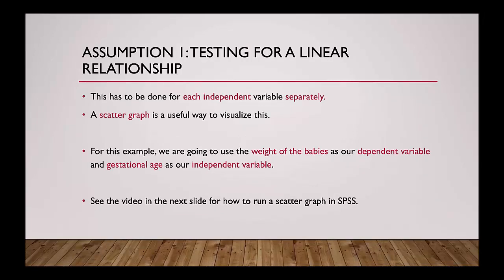The first assumption we are going to check is testing whether there is a linear relationship between the independent variables and the dependent variable. This has to be done for each independent variable separately. A scatter graph is a useful way to visualise this. For this example, we are going to use the weight of the babies as our dependent variable and gestational age as our independent variable.